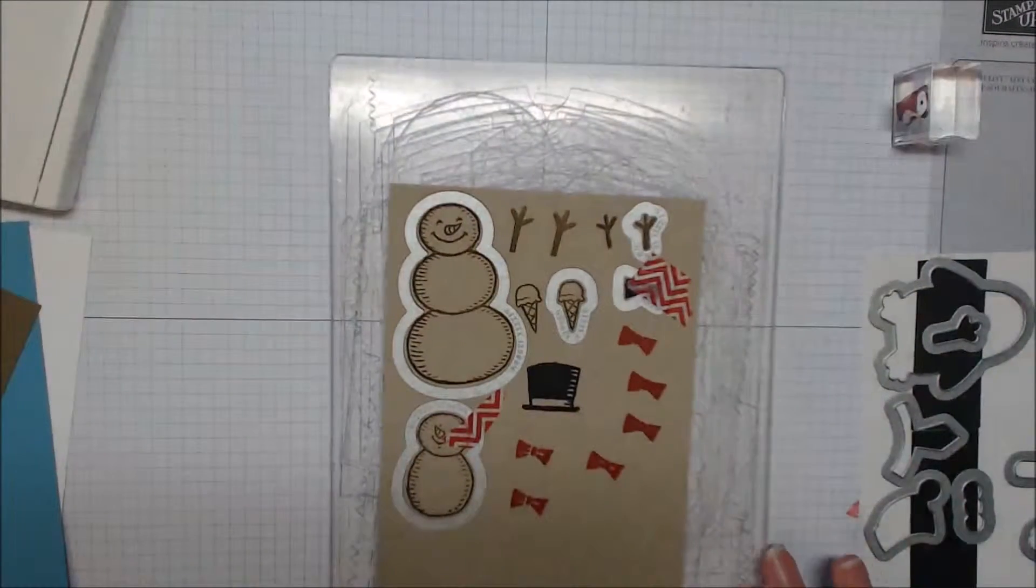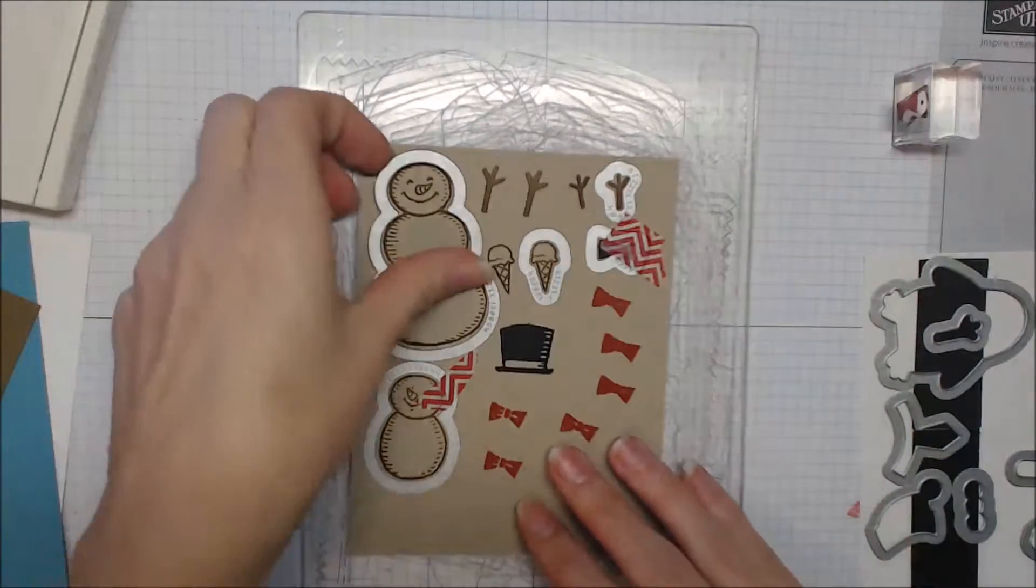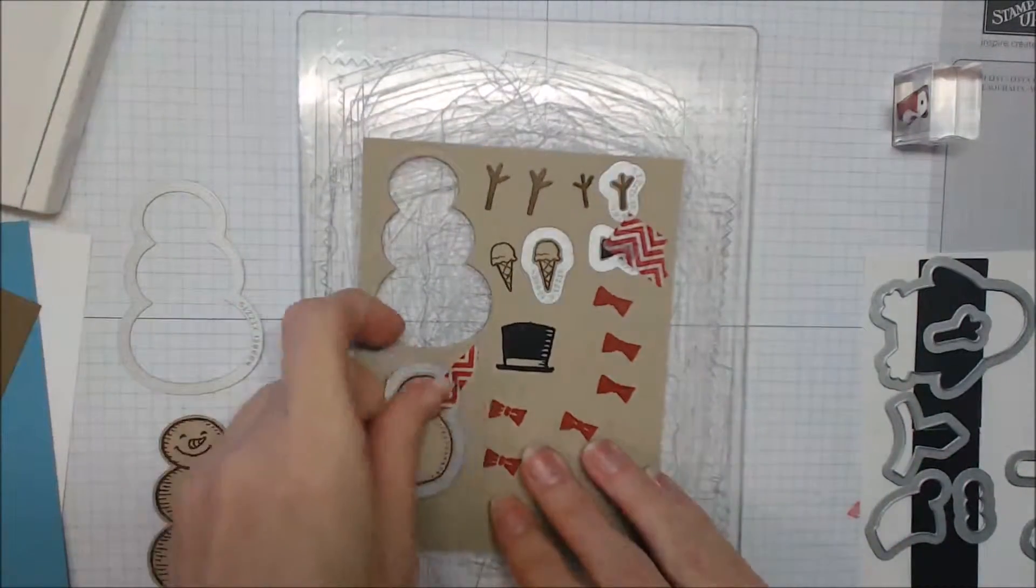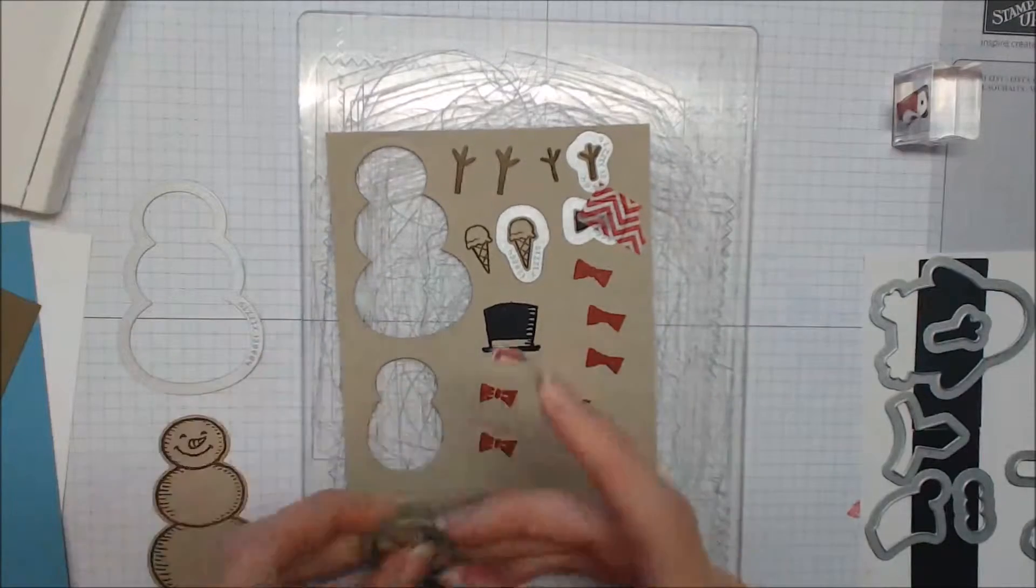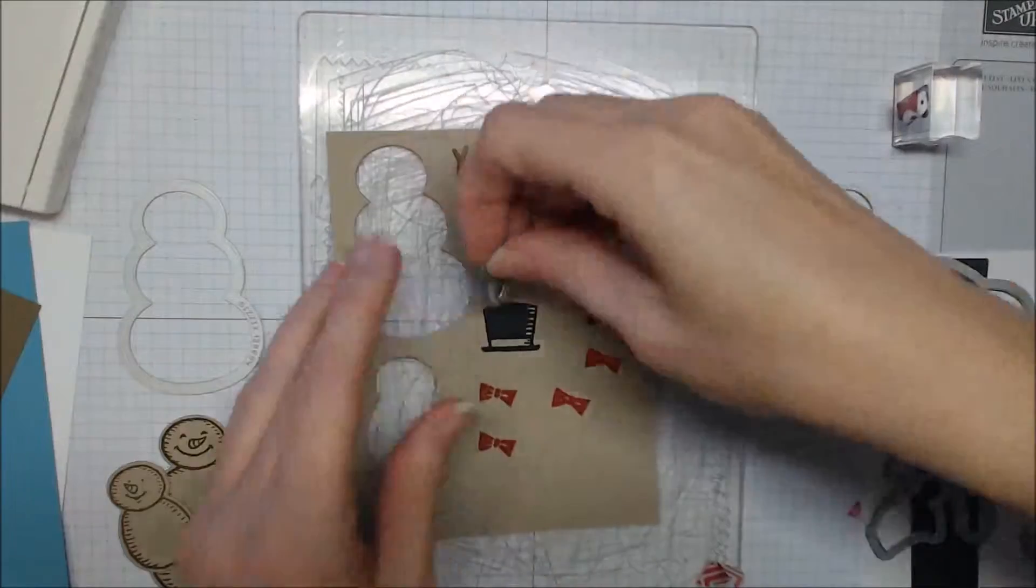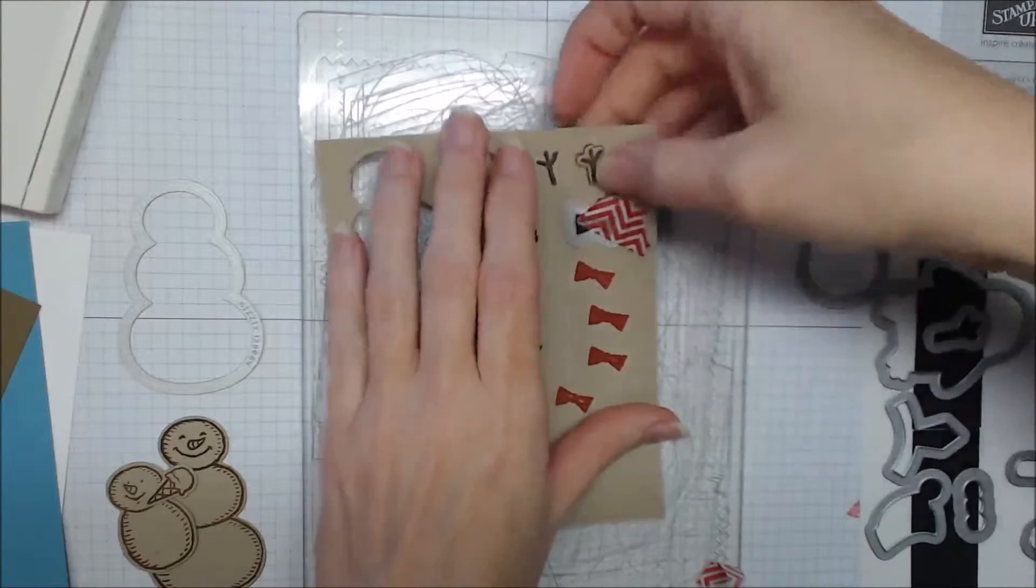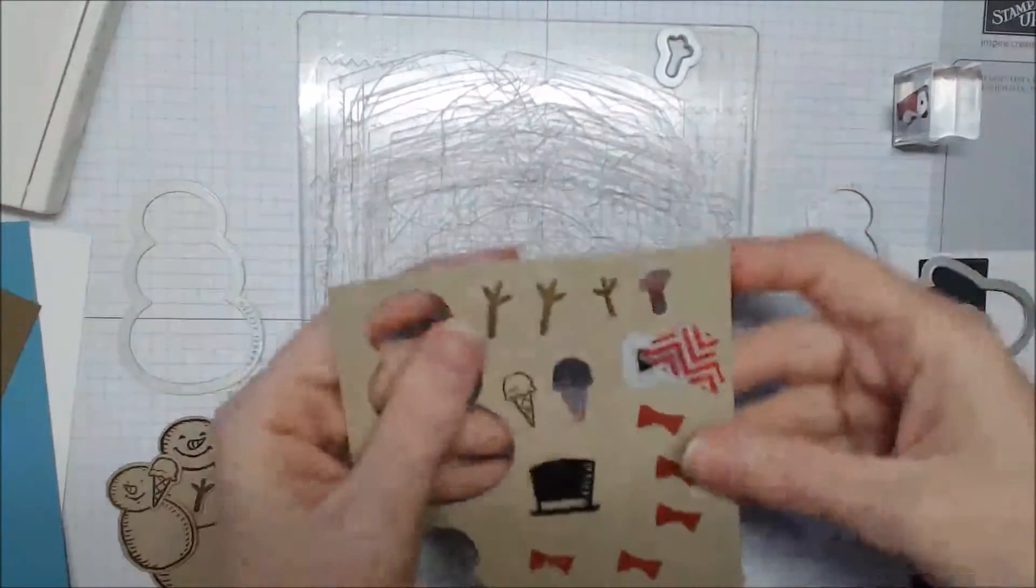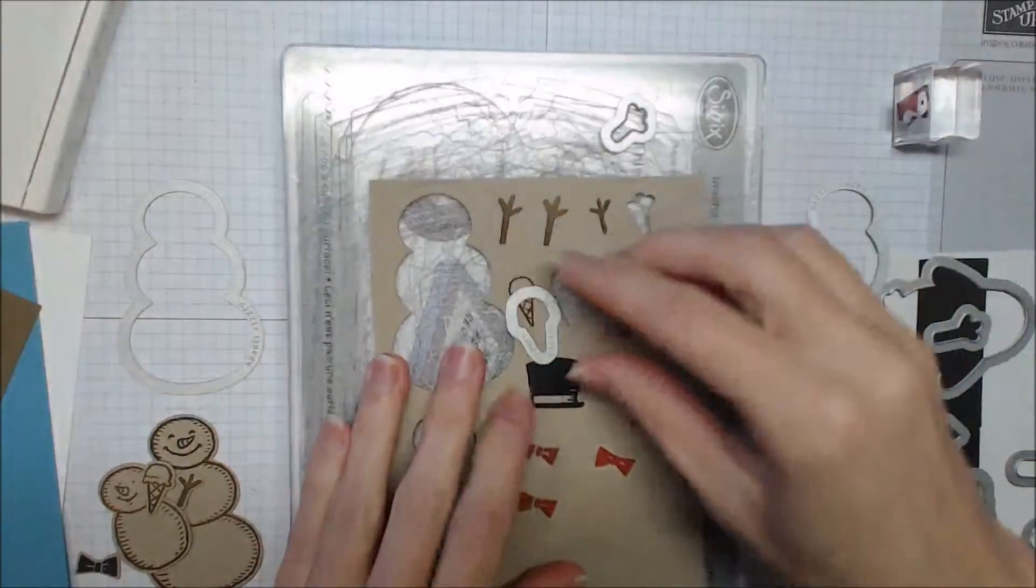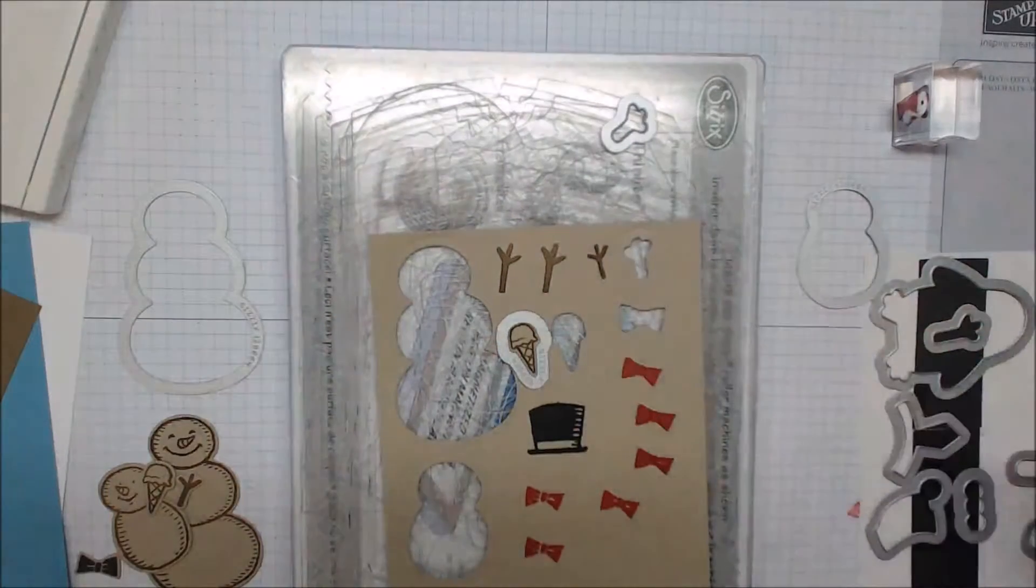So sometimes, especially with the smaller dies, if you have multiple images on one piece of paper, sometimes it's just easier and less frustrating to go ahead and use some washi tape to secure them before you run them through your Big Shot or whatever system you're using. So now we've got those all cut out and we're going to pop those images out so that we can run the pieces through again, getting some more images cut out.